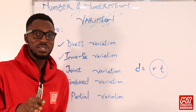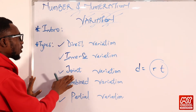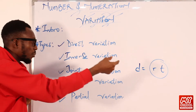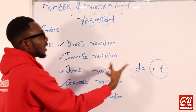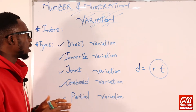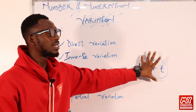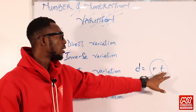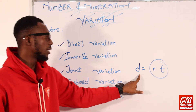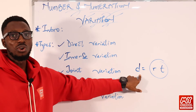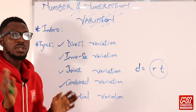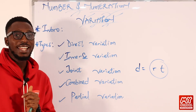In joint variation, instead of one variable affecting the other, we're talking about at least two variables that determine what happens to the result. If it's a direct variation happening, it's direct to both quantities. As these two quantities increase, the result also increases; if they go down, the result goes down. Joint variation is just the expanded form of direct variation.